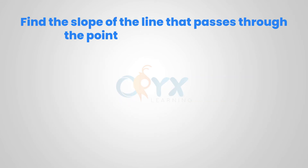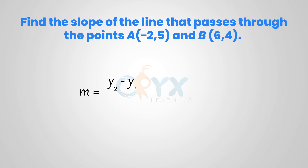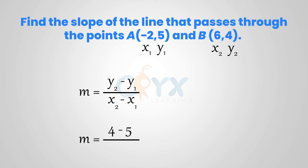Find the slope of the line that passes through the points a: (negative 2, 5) and b: (6, 4). Using our slope formula, y2 minus y1 over x2 minus x1, and labeling the points as x1, y1 and x2, y2, substituting the values into the slope equation, we get m equals 4 minus 5 over 6 minus negative 2. Simplifying, 4 minus 5 is negative 1, and 6 minus negative 2, or 6 plus 2, is 8. So the slope is negative 1 over 8.